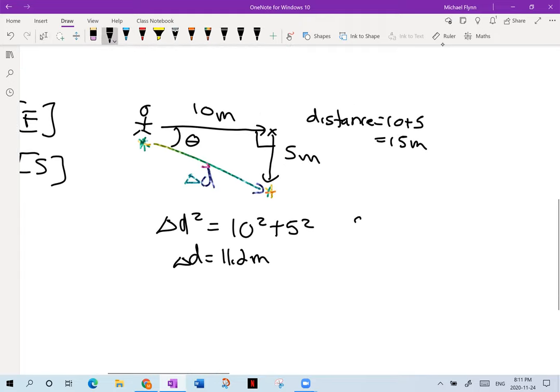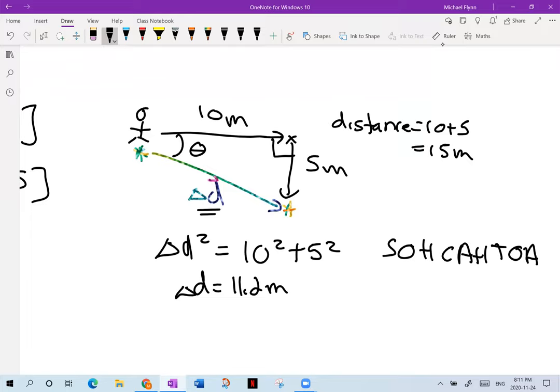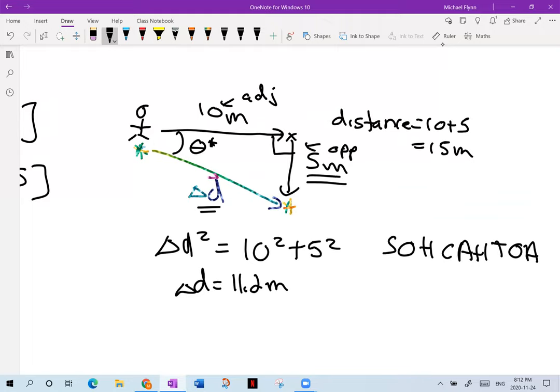But I also need the direction. So I'm going to call that angle theta. Now, if you recall SOHCAHTOA, because you are all, of course, math geniuses. So SOHCAHTOA means sine equals opposite over hypotenuse, cosine equals adjacent over hypotenuse, and tangent equals opposite over adjacent. Well, I mean, of course, you know these trig ratios. So let's take a look at this. The rainbow here is my hypotenuse. The 10 meters is my adjacent side because it's adjacent to the angle theta here. I'll put a little star beside it. Whereas 5 is opposite.